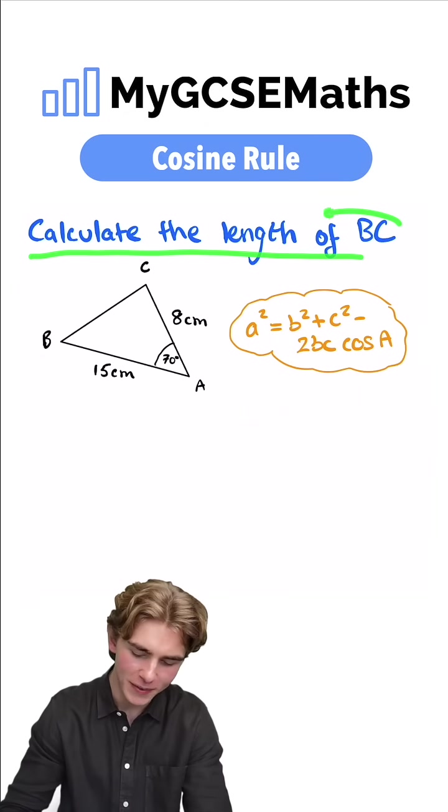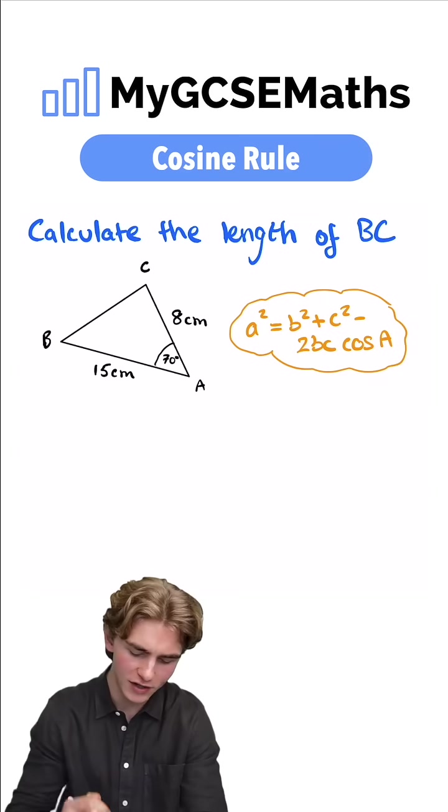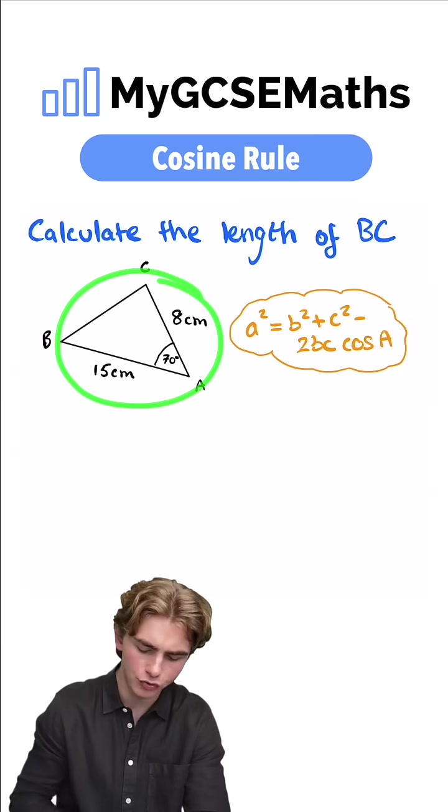It says calculate the length of BC. Now here we're going to be able to use the cosine rule and the reason is because we have a non-right angle triangle.